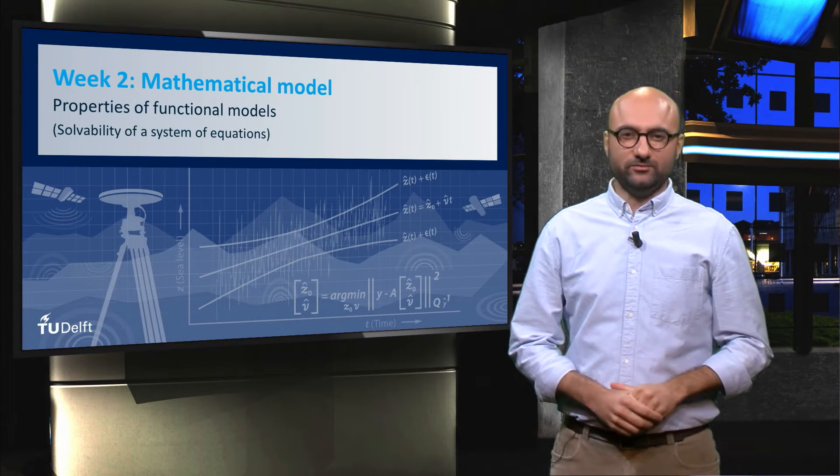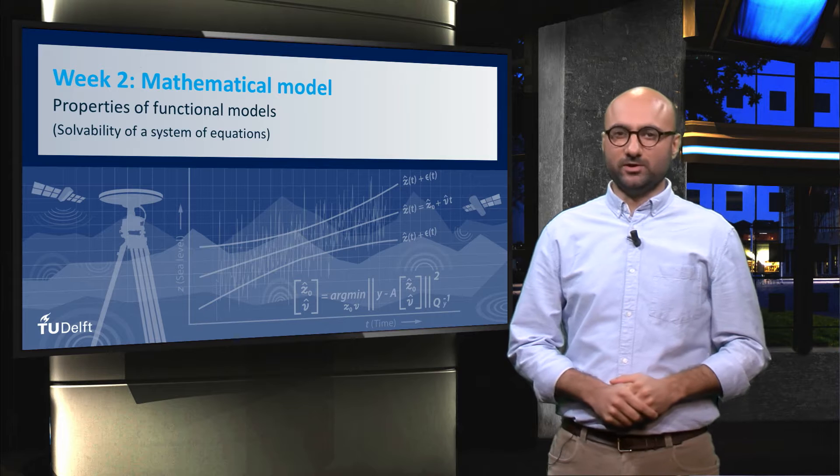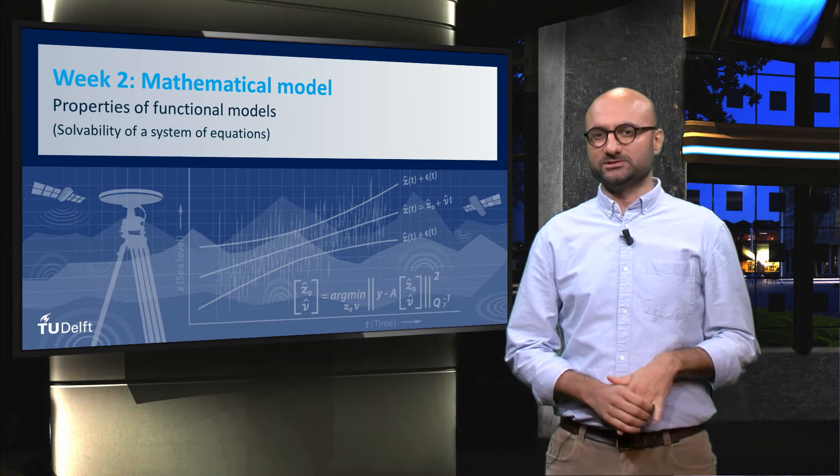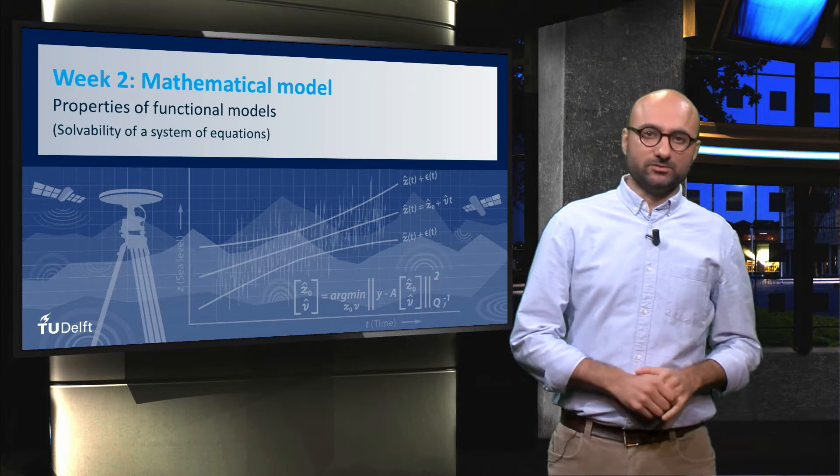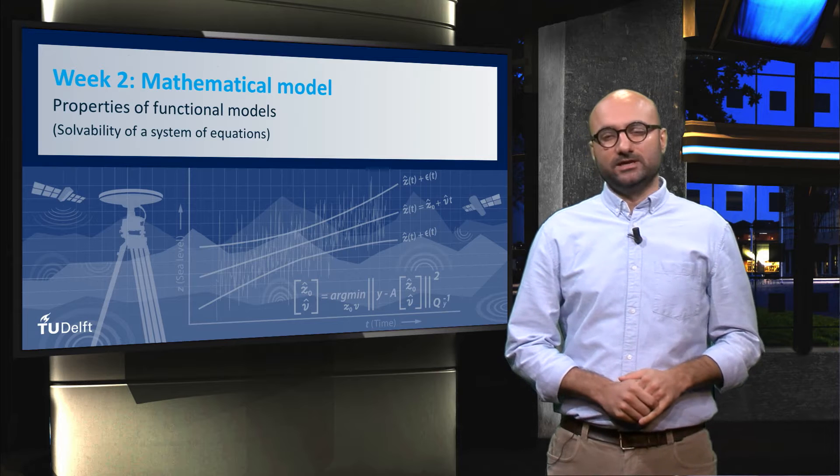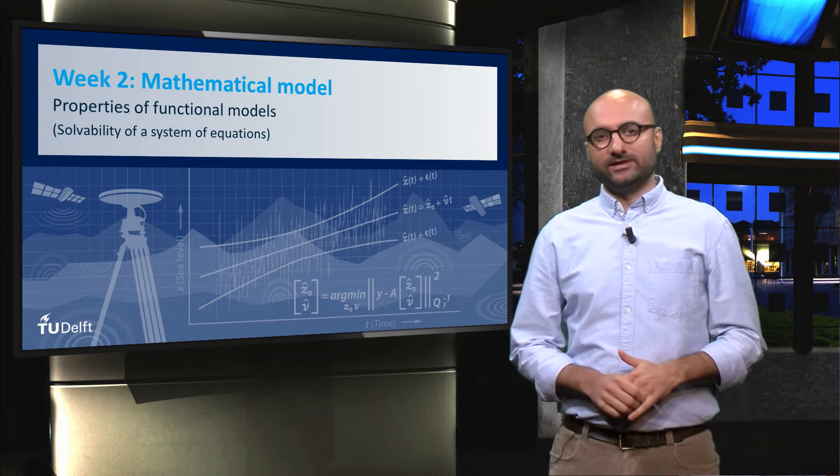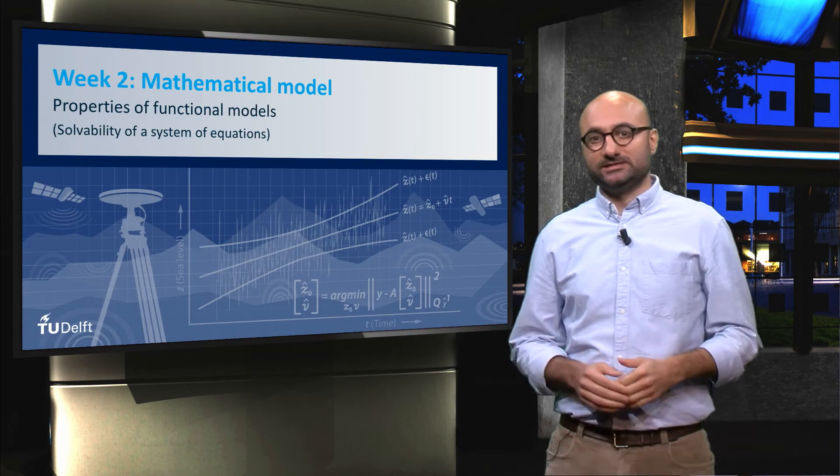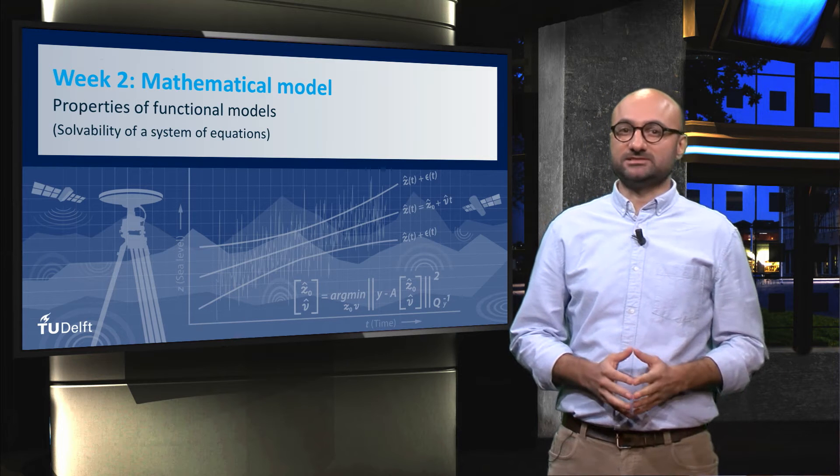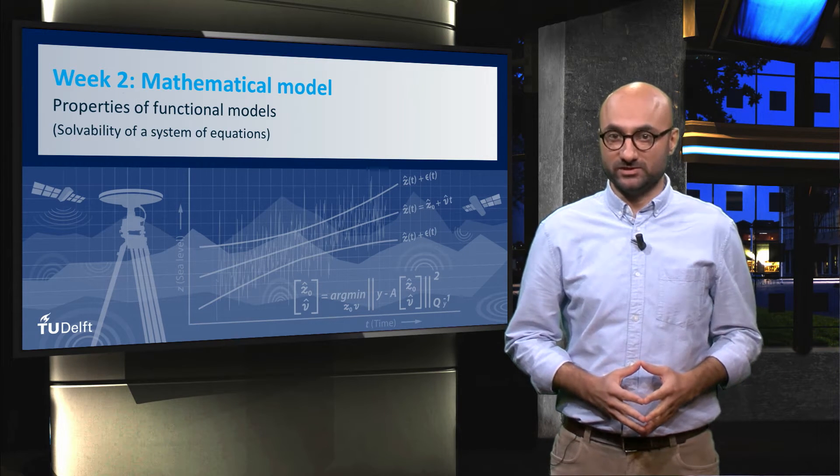Hello everyone. So far in this week we learned about the two parts of the mathematical model for estimation problems: the functional model and the stochastic model. The first one is a function that relates observation to unknowns, and the latter describes statistical characteristics of the observational errors.